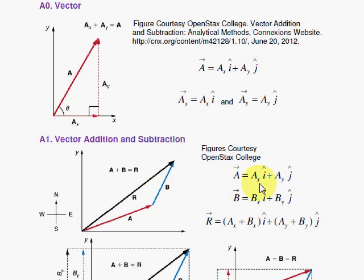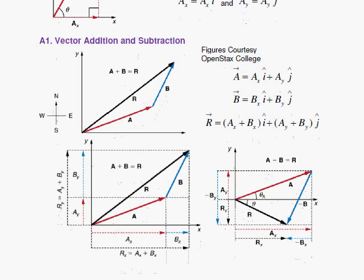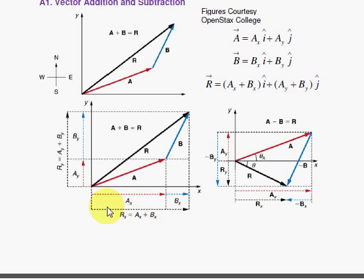So here we can write the resultant as A sub x plus B sub x, taking us way out to the east, let's say here. And then your y total would be your A sub y plus your B sub y to get you way up here. So think of each vector as having an x and a y component.